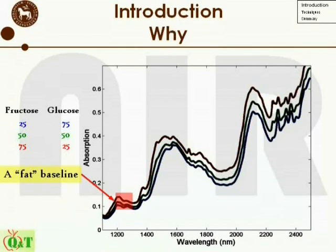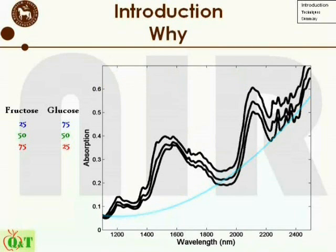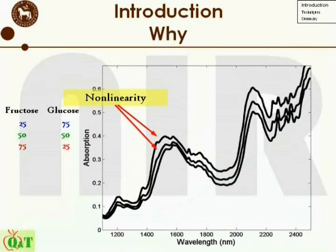There is a flat baseline — there is no point in the spectrum where all three spectra have the same absorbance value. The baseline has a slope or a curve. Although calling it a baseline for NIR spectra is not entirely true, NIR spectra in general increase in absorption with increasing wavelengths. And there are also non-linearities in the spectra. Although the concentration ratio between the blue, red, and green is 1 to 2 to 3, it is not possible to find a place in the spectra where the distances between the three lines are equidistant.